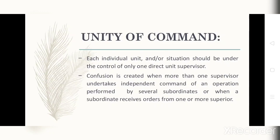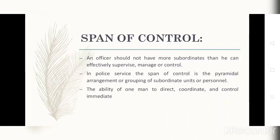Next, let's go with the span of control. Span of control means an officer should not have more subordinates than he can effectively supervise, manage, or control. In a police service, the span of control is the pyramidal arrangement or grouping of subordinate units or personnel, and the ability of one man to direct, coordinate, and control his immediate subordinates.